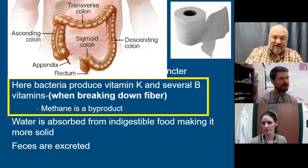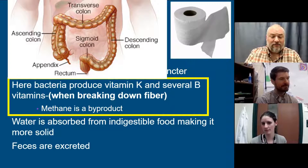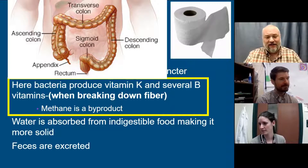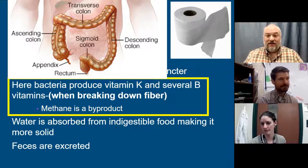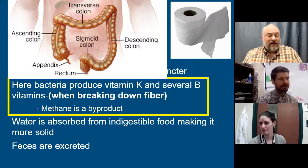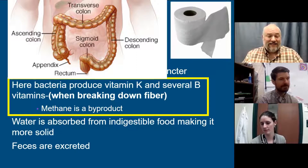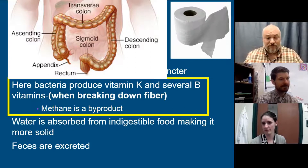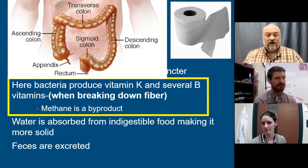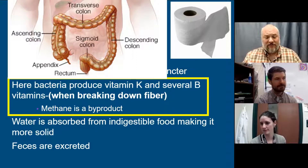We have a lot of bacteria living in the large intestine, and their job is to break down fiber. We have a symbiotic relationship with them — we provide them a place to live, warmth, and food in the form of fiber, which is cellulose from plant material that we can't digest ourselves. In return, they break that fiber down and produce vitamin K and vitamin B for us, which we need. Without them — if you kill them off with too much antibiotic — you'd get pretty sick.